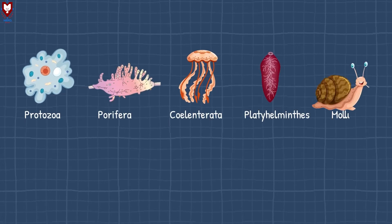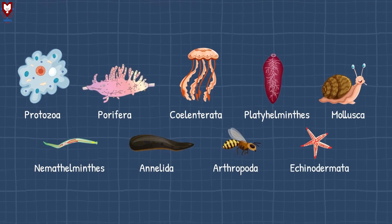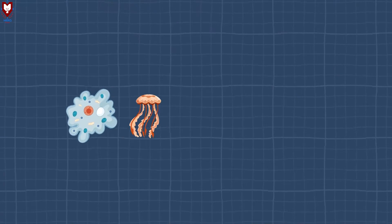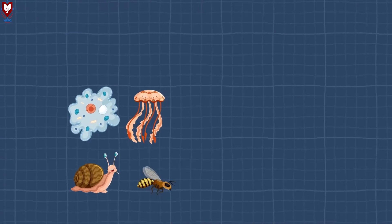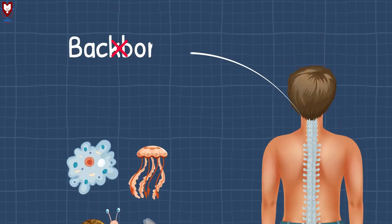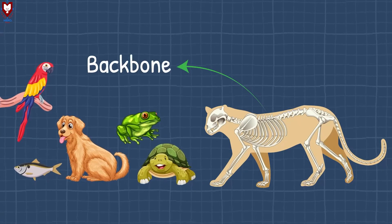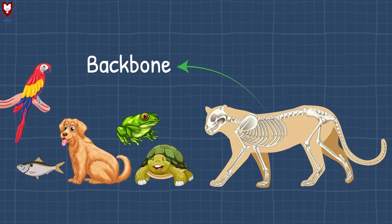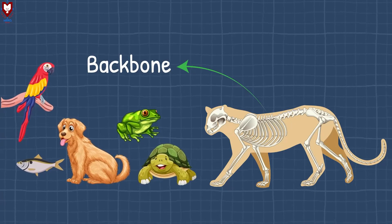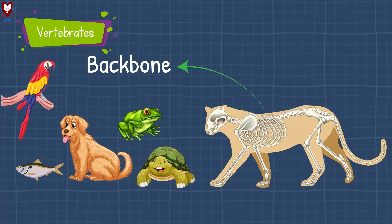Last video we learned about different types of invertebrates. Invertebrates are animals which do not have a backbone. Today in this video we will learn about different types of animals which have a backbone. Animals which have a backbone are called vertebrates.